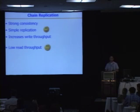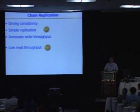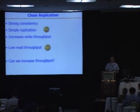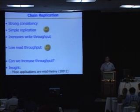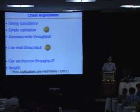The problem with chain replication is that there can be low read throughput, because all reads have to go to the tail. So if you increase the size of the chain, you don't get any increased read throughput. What we wanted to figure out was: could we increase the throughput? We use the insight that most applications are read-heavy — from industry, they sometimes see even up to a 100-to-1 read-to-write ratio in their object storage systems.